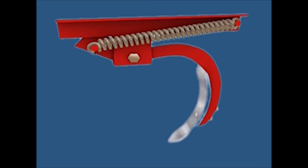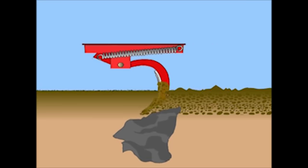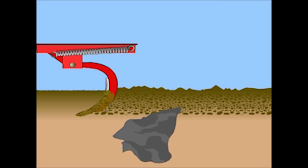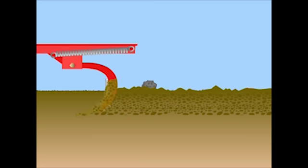This allows the tine to ride over obstructions in the soil without the inconvenience of stopping work to clear the obstacle, thus making it suitable for use in stone and root infested soil.